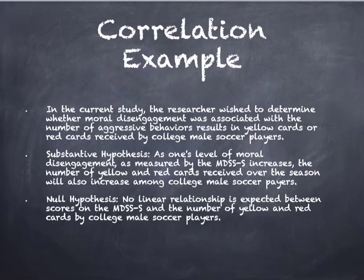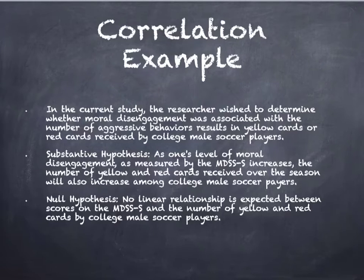The example we're going to look at here: the researcher wishes to determine whether moral disengagement was associated with the number of aggressive behaviors resulting in yellow card or red cards received by college male soccer players. The substantive hypothesis: as one's level of moral disengagement, as measured by the MDSSS, increases, the number of yellow cards and red cards received over the season will also increase. The null hypothesis: no significant linear relationship is expected between scores on the MDSSS-S and the number of yellow and red cards. It's important that they indicate linear relationship because correlation cannot handle non-linear relationships, such as curvilinear relationships.